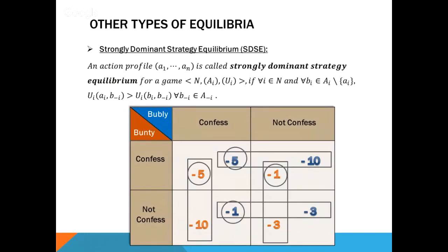There are other types of equilibrium. A strongly dominant strategy equilibrium states that no matter what the other players do, this player gets a strictly higher payoff by choosing action a_i over any other action b_i. In the context of Prisoner's Dilemma, no matter what Bubbly does, Bunty gets a strictly higher payoff by choosing to confess over not confessing. The same holds for Bubbly — thus, both confessing is a strongly dominant strategy equilibrium.